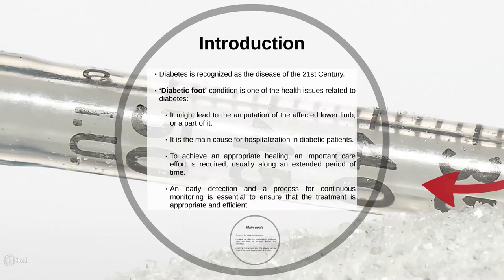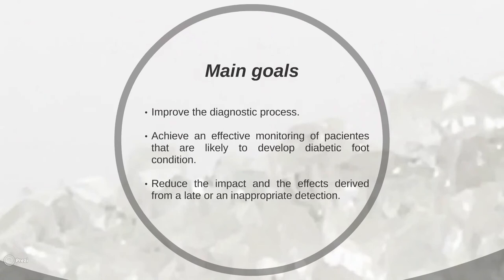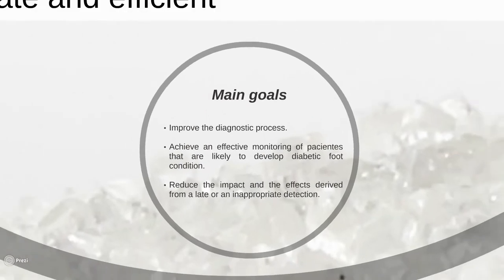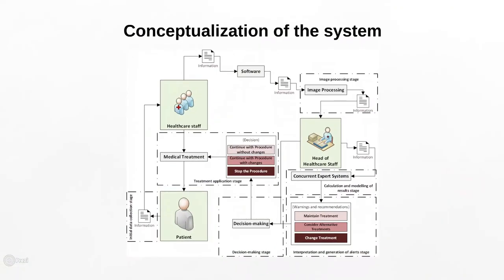Our idea is to improve the diagnostic process in order to achieve effective monitoring of these patients. We think this might help reduce the impact of late and inappropriate detections. We start with the patient — taking information including the Wagner test, photographs from the feet of the patient, and other information related to risk factors. This information is first processed with an image processing algorithm, extracting the area per unit of time of wounds, if there are wounds on the feet of the patient.